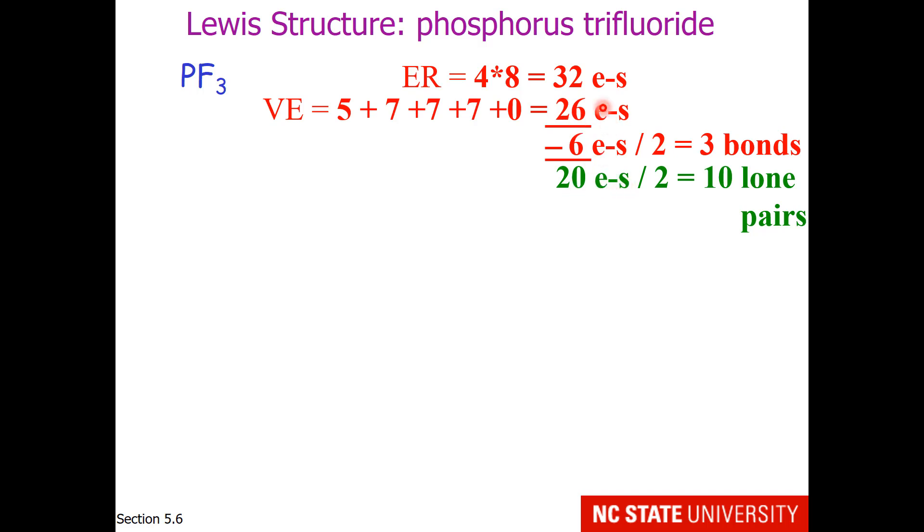Lone pairs will be the valence electrons minus the 6 electrons involved in bonds, so that there will be 20 electrons divided by 2 for 10 lone pairs.